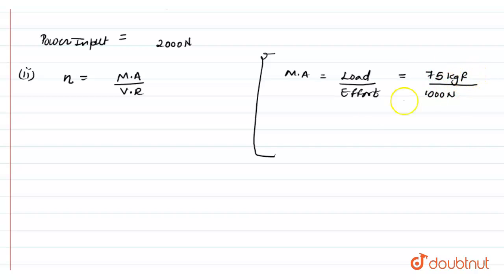By multiplying it with gravity we will convert it into newton. By solving this, our mechanical advantage comes out to be 0.75.